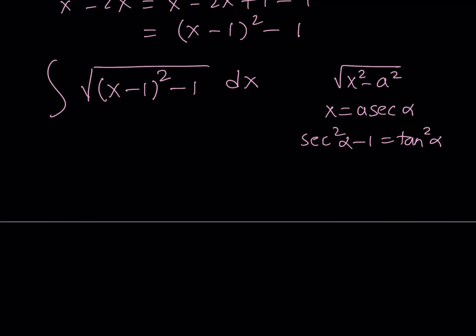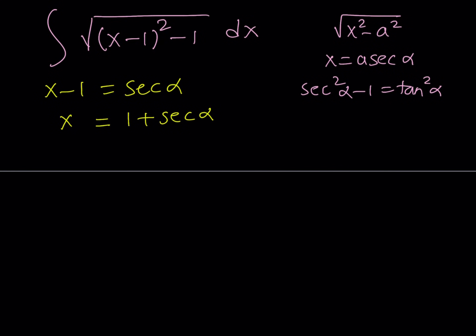So let's go ahead and replace x minus 1 with secant alpha. In this case our a is 1 because we're subtracting 1 squared. Now let's isolate x so we can find dx. From here, dx is found by differentiating the right hand side and multiplying by d alpha. The derivative of 1 is 0, and the derivative of secant alpha is secant alpha times tangent alpha, then multiplied by d alpha.